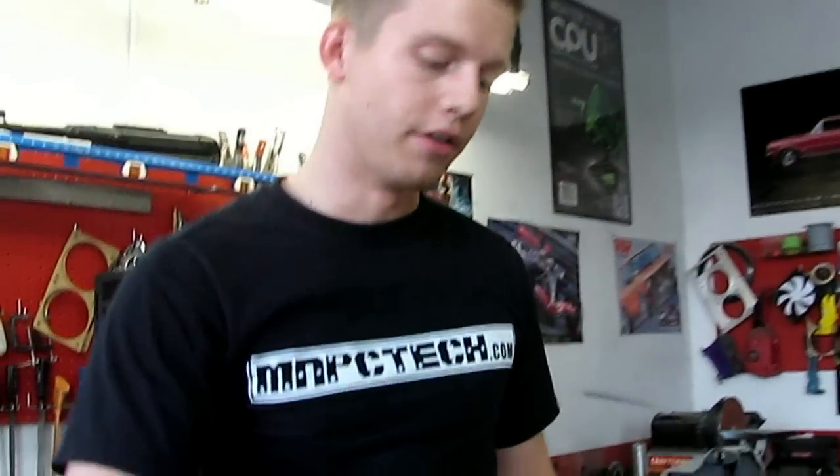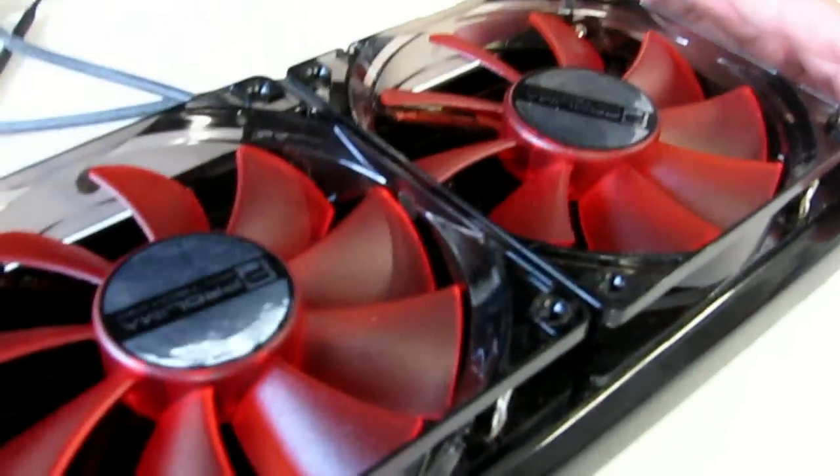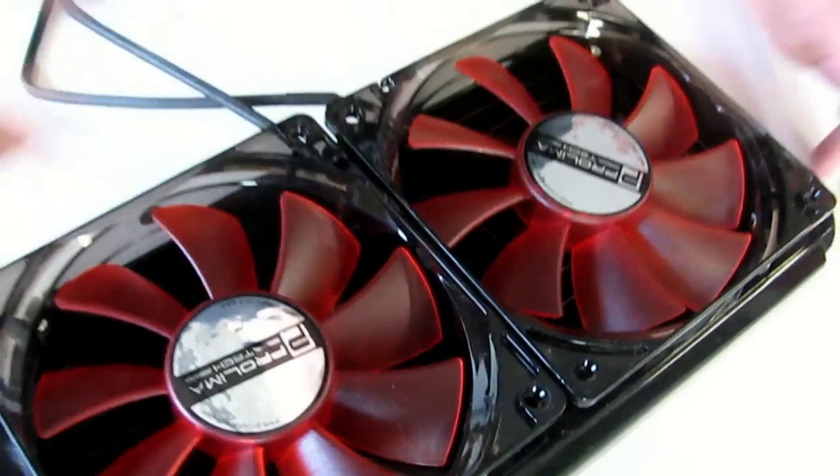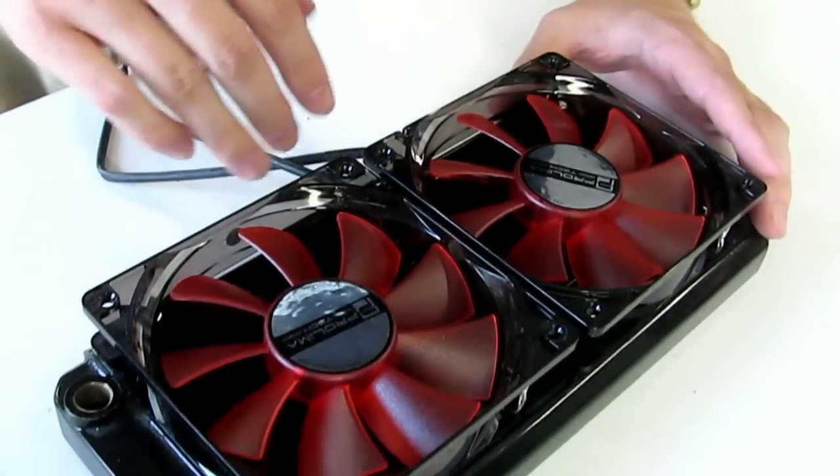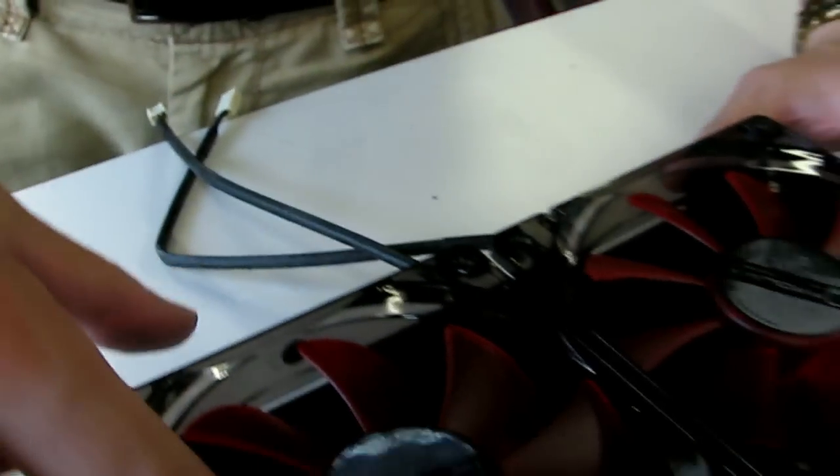I'm ready to install my radiator now so I've got my 120 millimeter fans that will go on top and these are going to be drawing air up and out of the case and you want to make sure that these wires are oriented so that they are in the back of the case not the front so you don't see them and they aren't in the way.